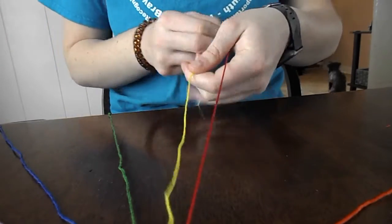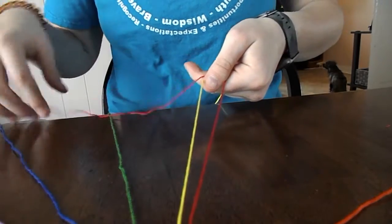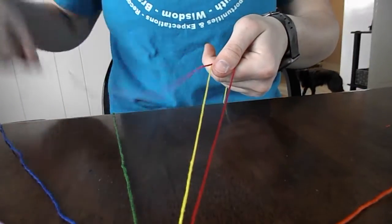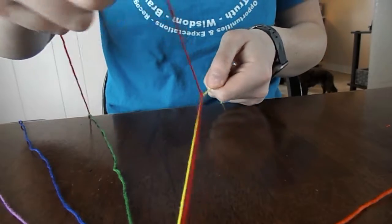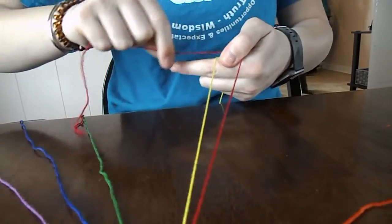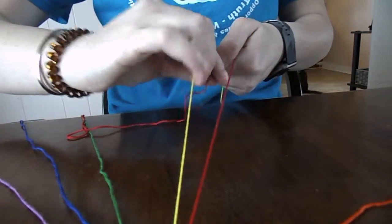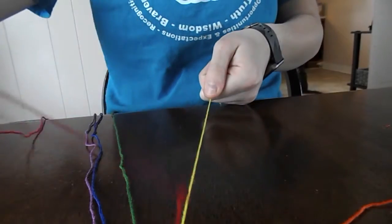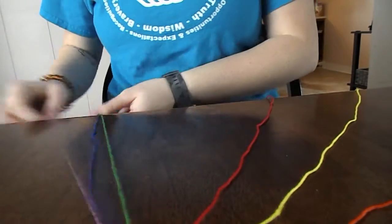Once again, you loop string 1 under string 3 and you pull up. You want to make sure the knot on the top is very tight. Again, repeat this two times on each strand.